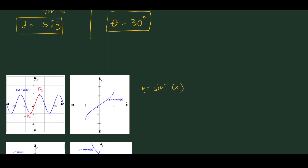As we know with inverse functions, the domain of y equals sine x becomes the range of the inverse, and the range of y equals sine x becomes the domain of arc sine x. So the domain of arc sine x is negative one to one, and the range is negative pi over two to pi over two.